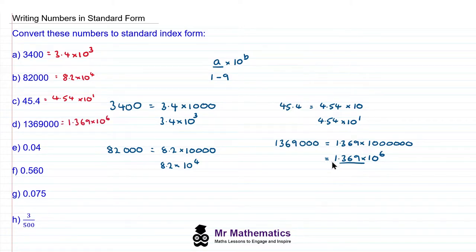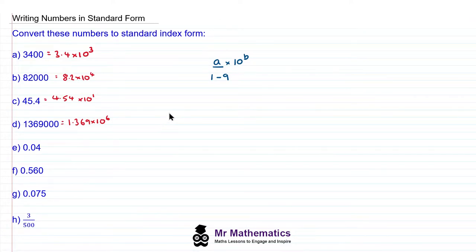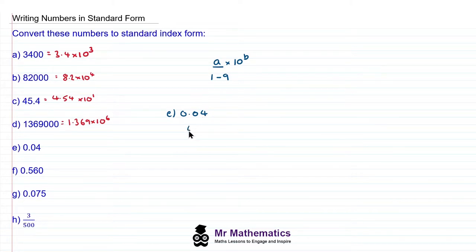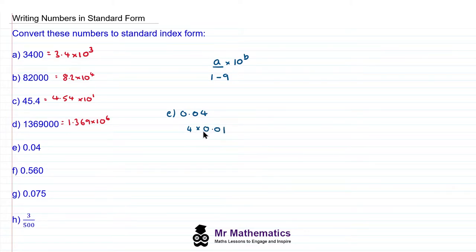Let's move on to questions E to H, where the numbers are less than 1. For question E, we have 0.04, and again we have to keep it in the same format of A times 10 to the B. This time, we need to make 0.04 into 4, because 4 is a value between 1 and 9. So what do we need to multiply 4 by to get 0.04? Well, this is 4 multiplied by one hundredth, and as a power of 10, this would be 4 times 10 to the power of negative 2.